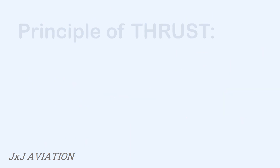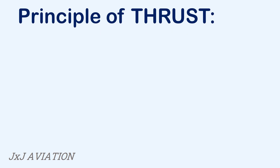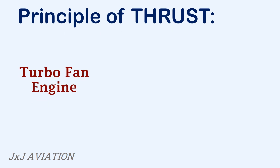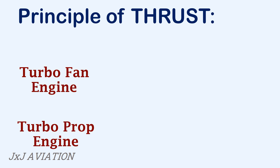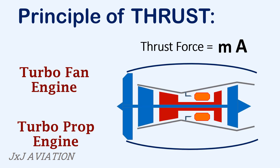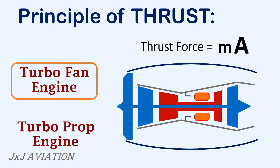First let's see the principle of thrust generation on a turbofan engine and a turboprop engine. If we apply Newton's second law, the thrust force is equal to the mass of air entering the engine multiplied by the acceleration. If we consider a turbofan engine, a small mass of air enters the engine which is accelerated to a much higher value inside the engine, causing an increase in the thrust force.